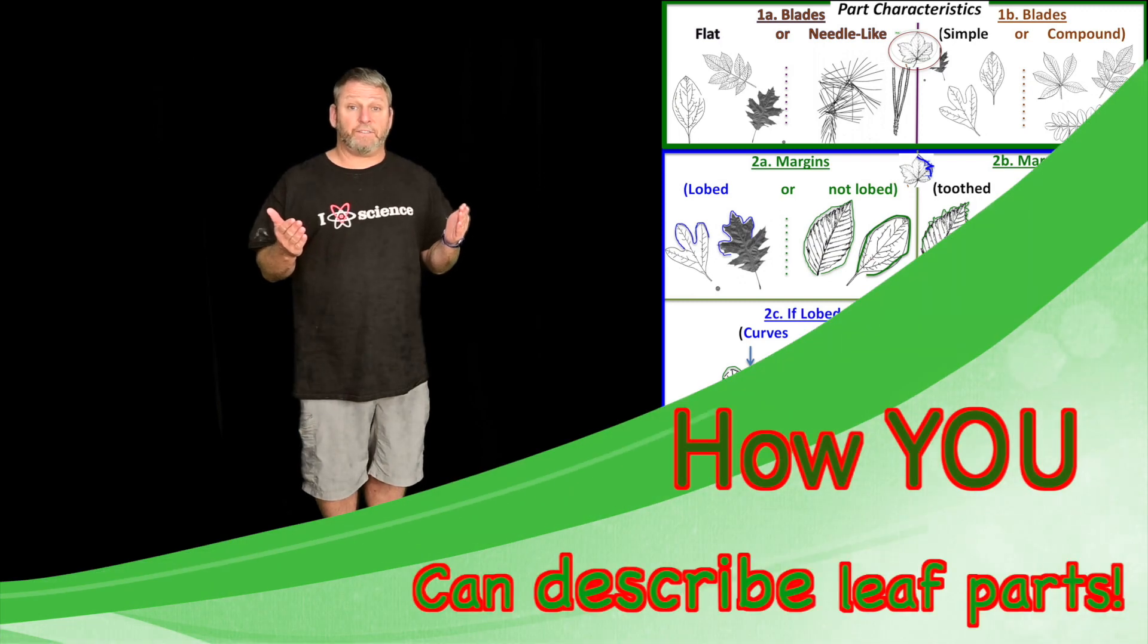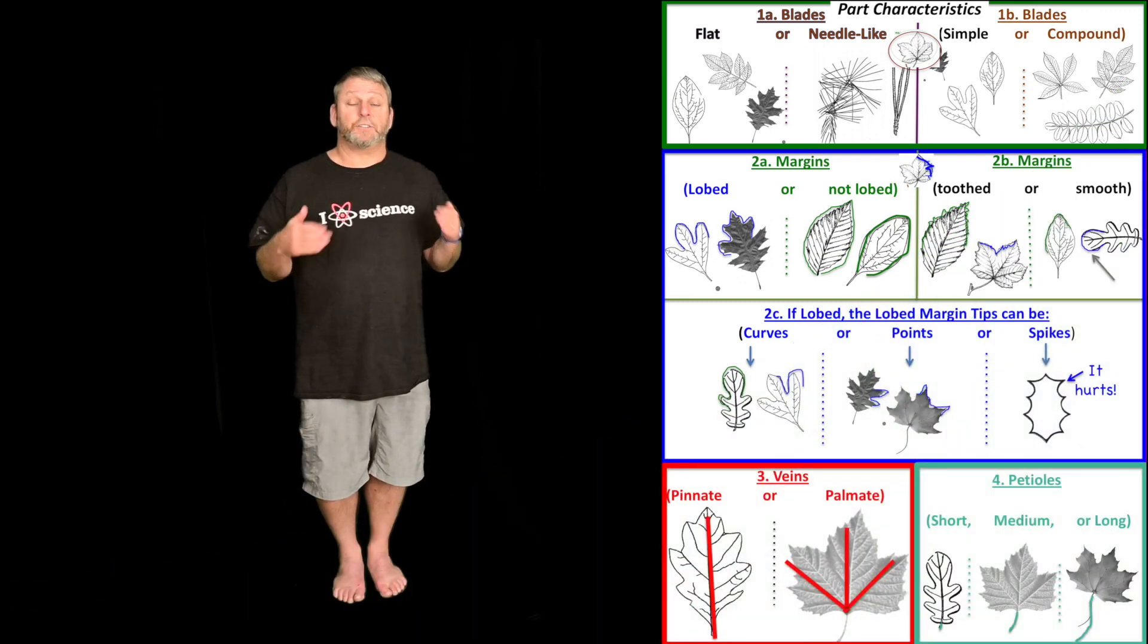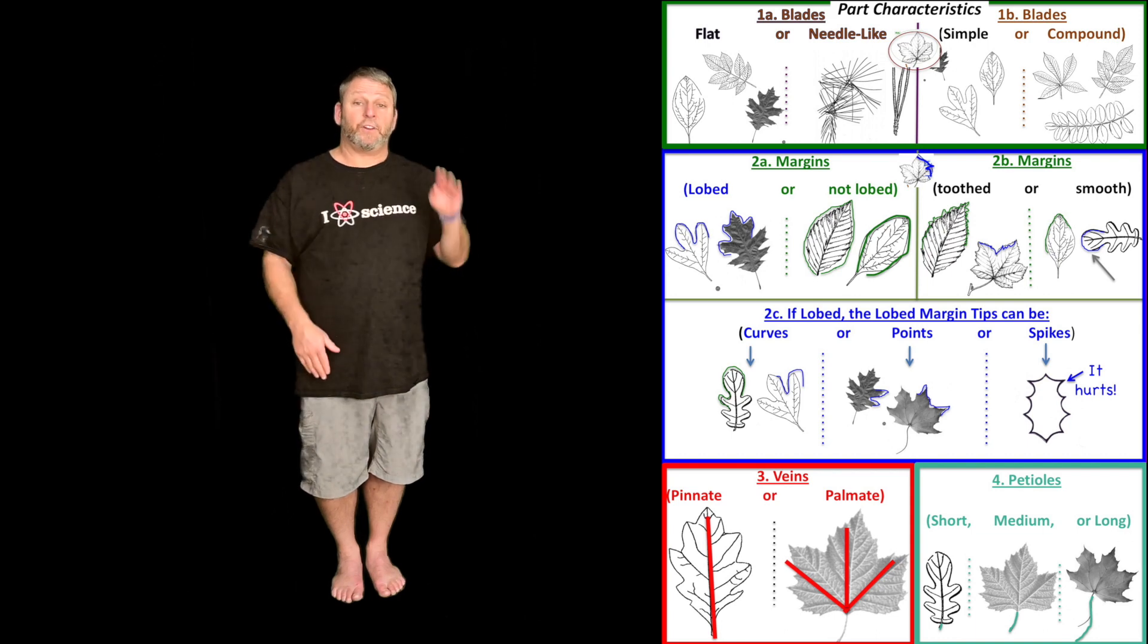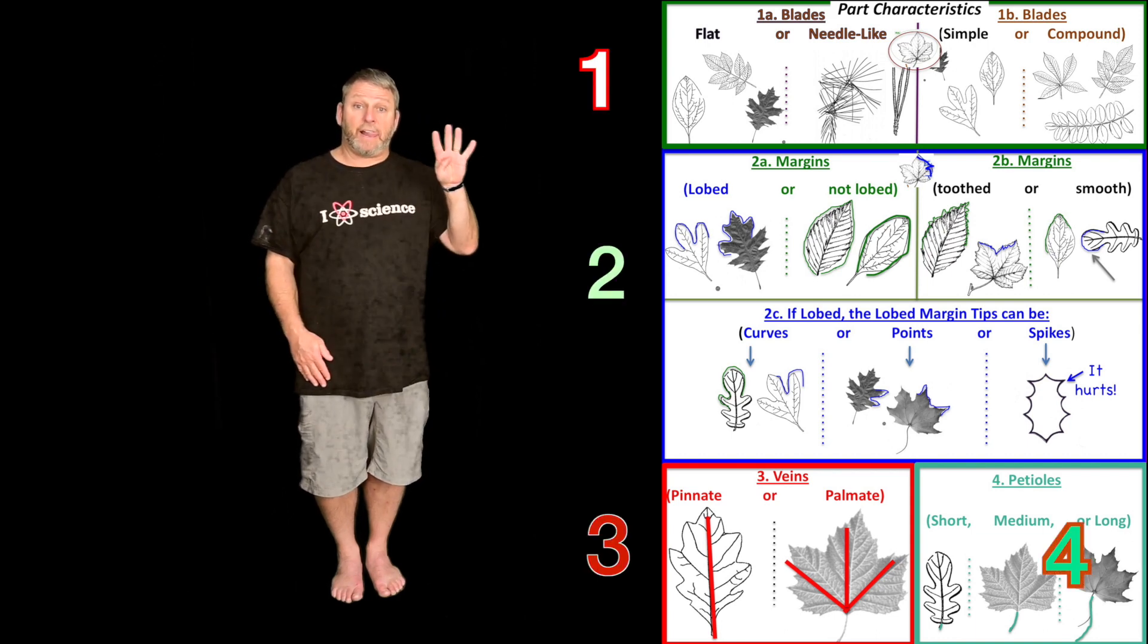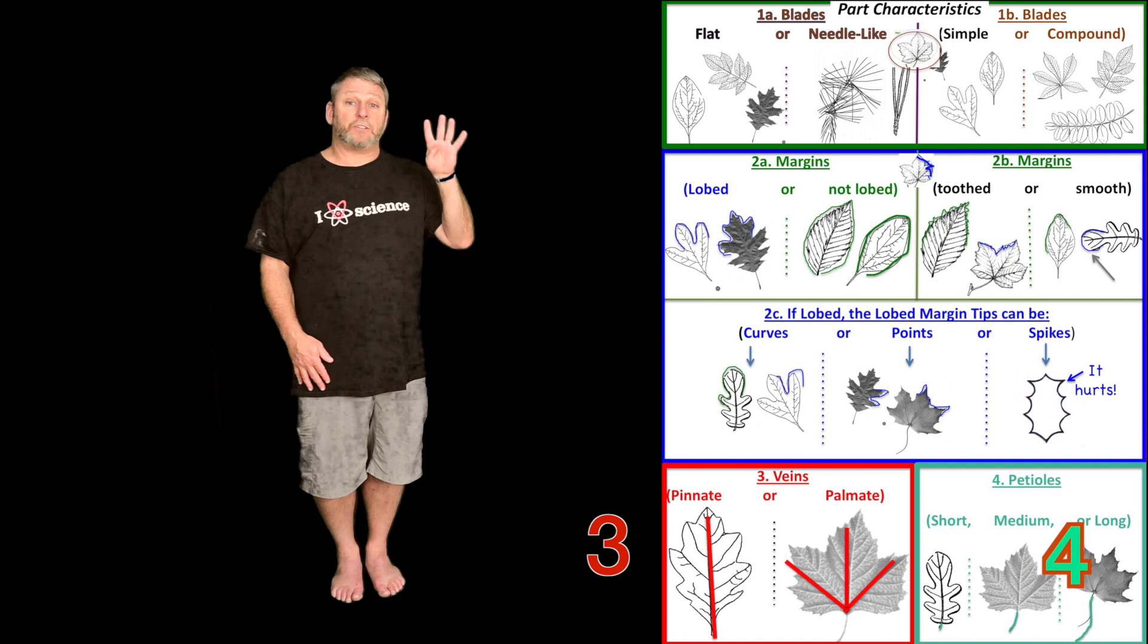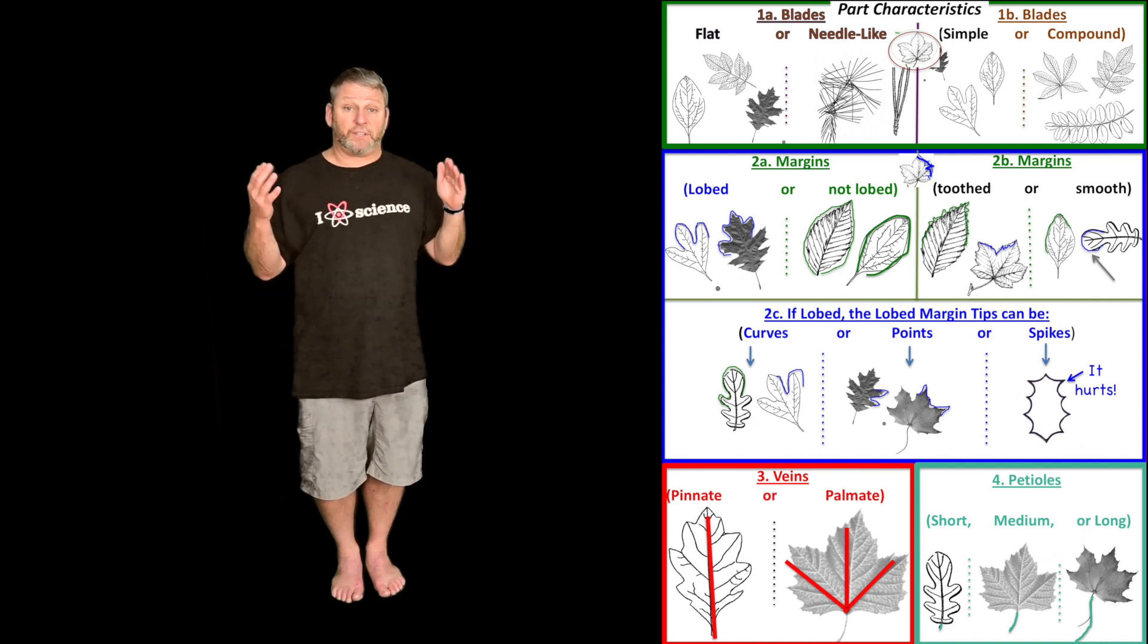When scientists describe each part of the leaf, you're ready to practice describing each part of the leaf all by yourself. Here's a few things to remember, and here's an example of how to do it. There are four parts of the leaf, and each part of the leaf has one or two different ways to describe it.